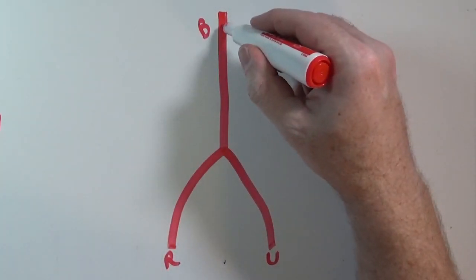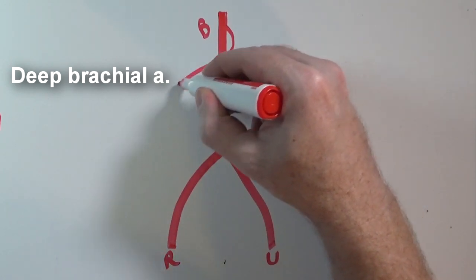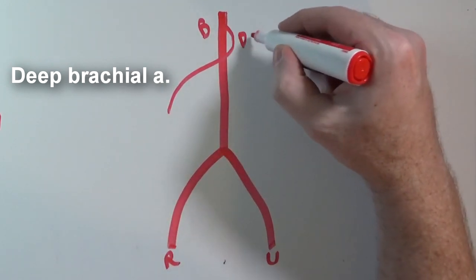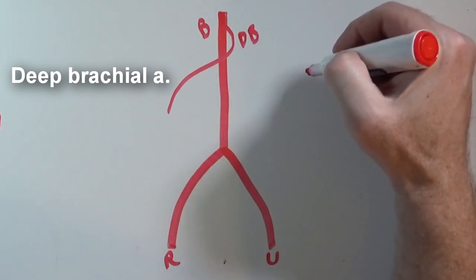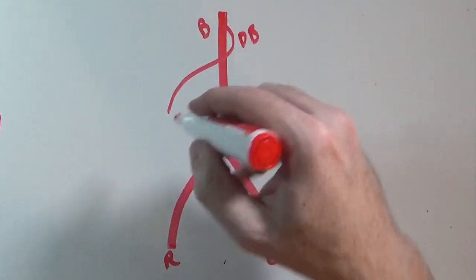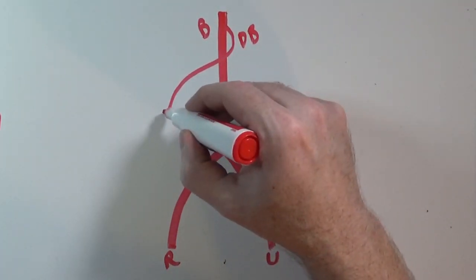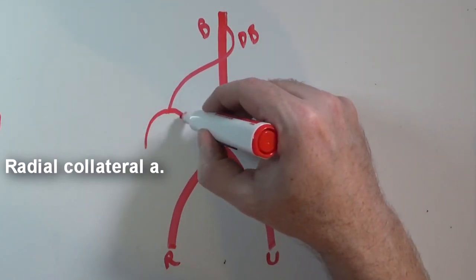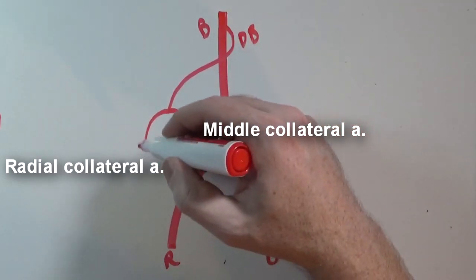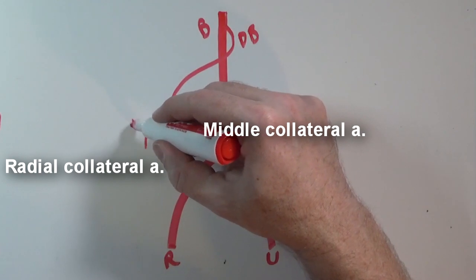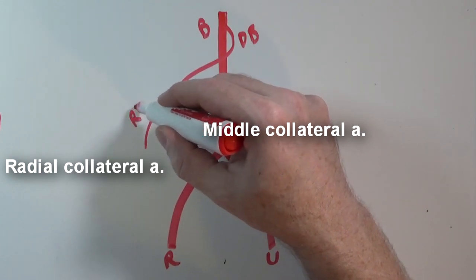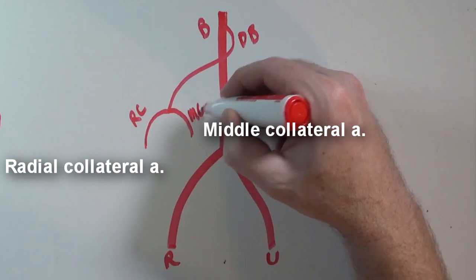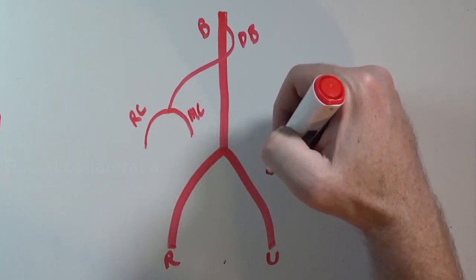Branching off the brachial is the deep brachial artery, which runs behind the humerus in the radial groove with the radial nerve. The deep brachial artery has two branches: the radial collateral artery (RC) and the middle collateral artery (MC).